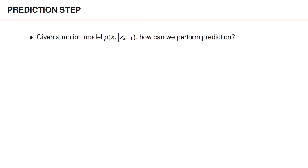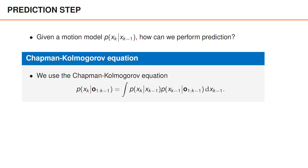Let us start with the prediction step, which is quite simple. Given that we have a motion model, we perform prediction using the Chapman-Kolmogorov equation, which means that we take the product of the posterior at time k-1 and the motion model, and then integrate out the state at time k-1. Note that the motion model has not really changed compared to last week, and the prediction step is also performed in exactly the same way.